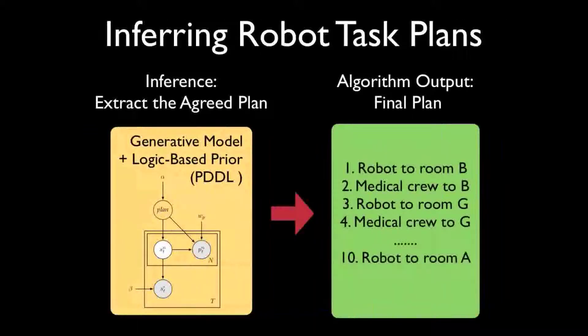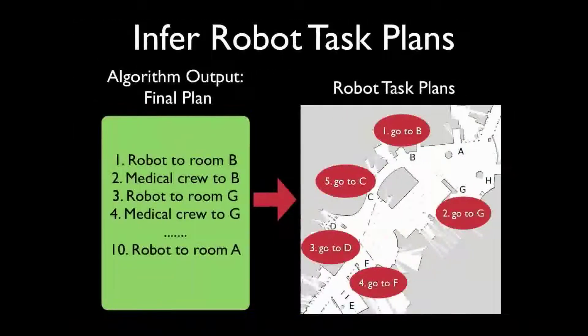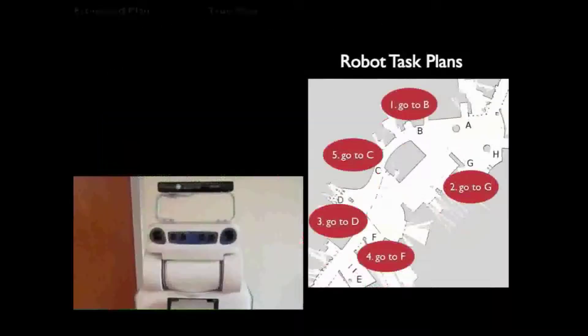The output of the algorithm is a distribution over plans. The most likely plan is delivered to the robot for execution.